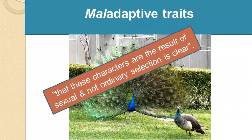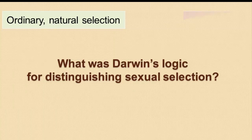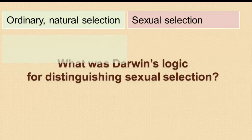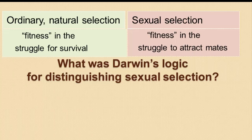Darwin noted that these characters — the peacock's tail and other examples — are the result of sexual and not ordinary selection. His logic was that ordinary natural selection was different from sexual selection: natural selection was about fitness in the struggle for survival, whereas sexual selection was fitness in the struggle to attract mates.